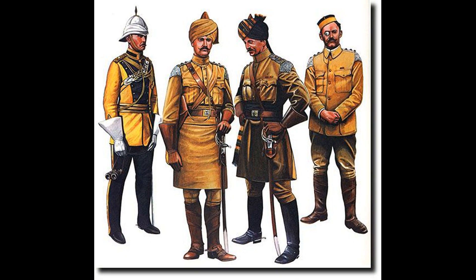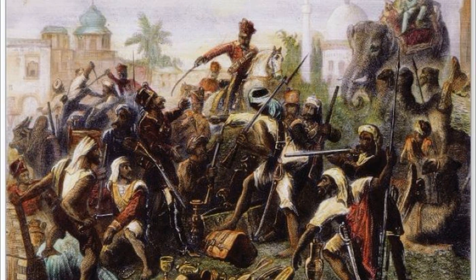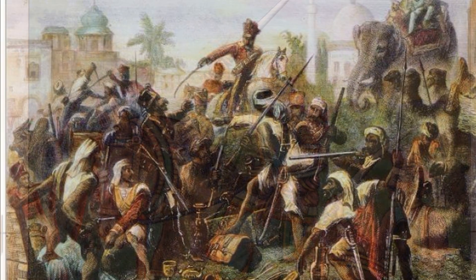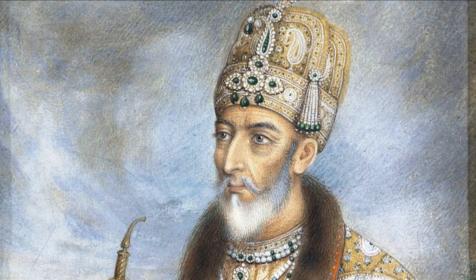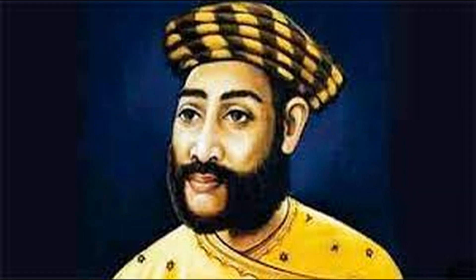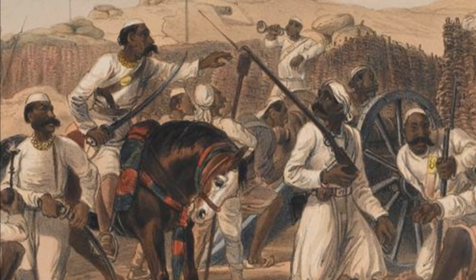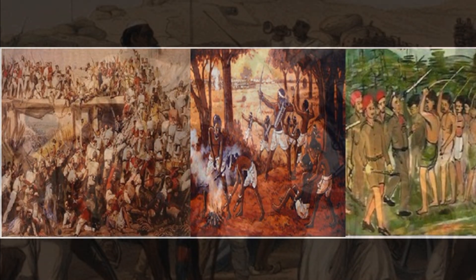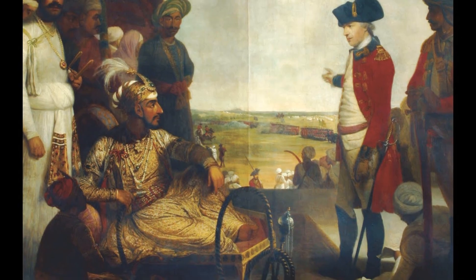The revolt transcended religious and regional divides, uniting diverse communities against the common oppressor. Leaders like Rani Lakshmibai, Bahadur Shah II, and Koover Singh played crucial roles in galvanizing local support and inspiring resistance. The rebels aimed not only to protect their religious sentiments but also to restore indigenous rulers to power and resist the economic exploitation imposed by the East India Company.